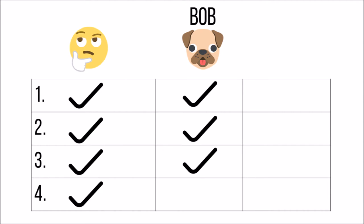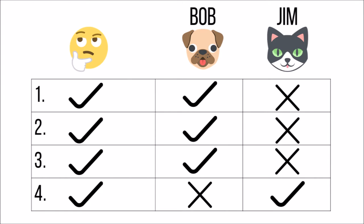So for example, suppose candidate Bob has the same stance as voter 1 on every issue except number 4, and candidate Jim has the same stance as voter 1 on issue 4 and no other issues. If voter 1 places a much heavier priority on issue 4 than on issues 1 through 3, voter 1 is going to vote for candidate Jim even though he only agrees with him on a fraction of the issues.